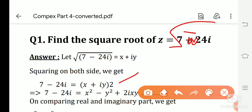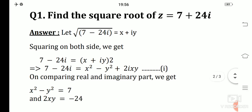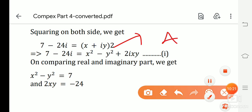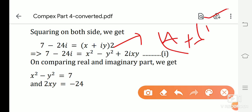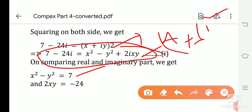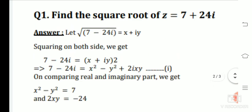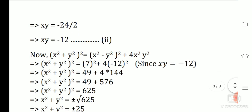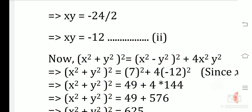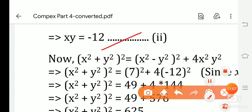Squaring both sides: 7 − 24i = (x + iy)². Expanding using (a + b)² = a² + b² + 2ab with a = x and b = iy: we get x² + i²y² + 2ixy = x² − y² + 2ixy. Comparing real and imaginary parts: x² − y² = 7 (Equation 1) and 2xy = −24, so xy = −12 (Equation 2).